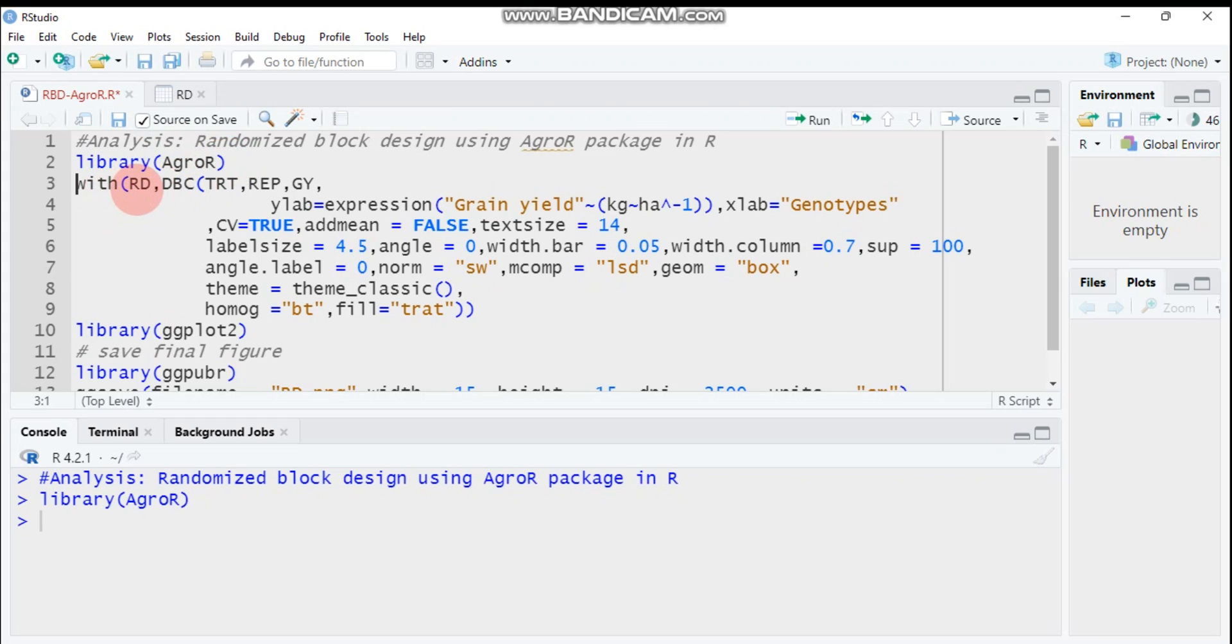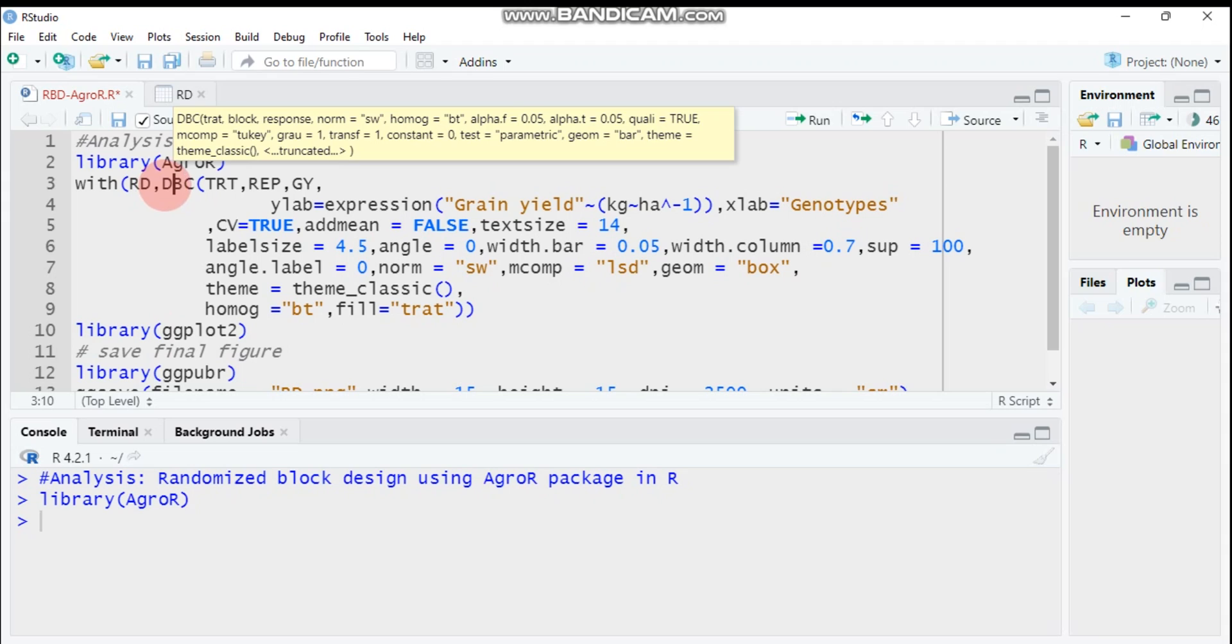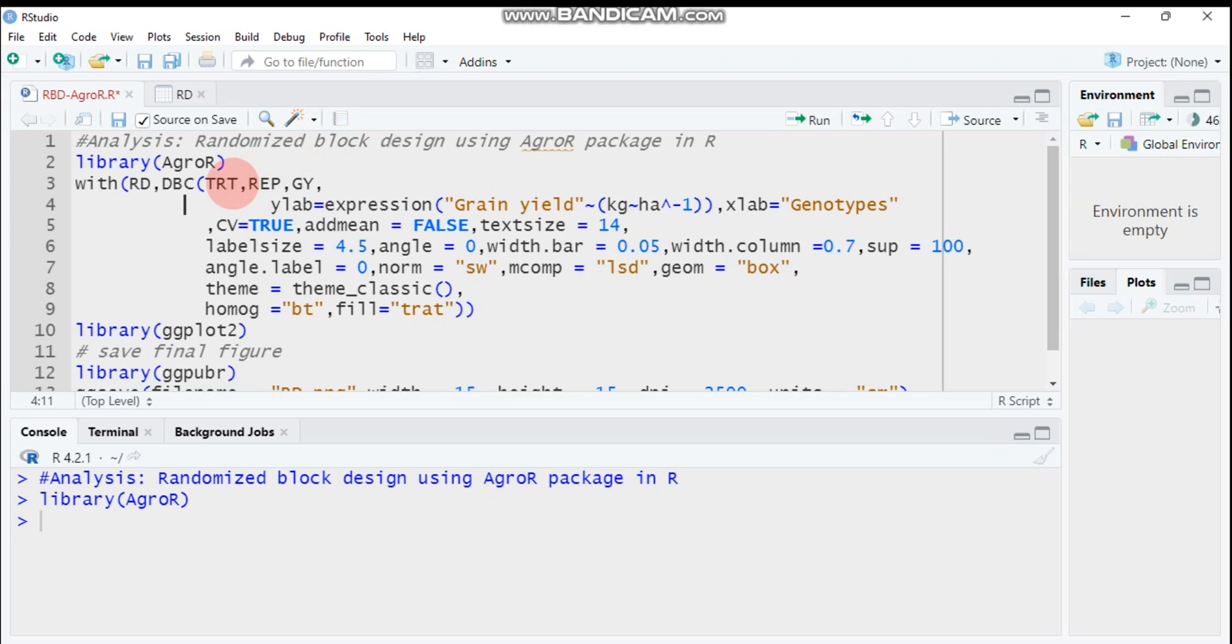Then you have to use the function followed by the data name and followed by DBC. DBC is a function that helps us compute the randomized block design in this package, followed by the columns that contain the treatment.